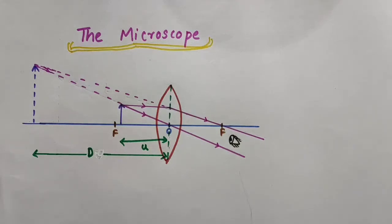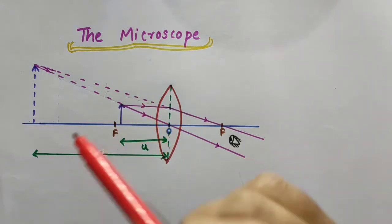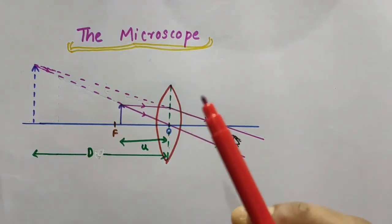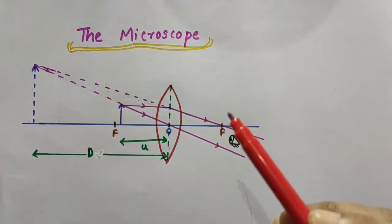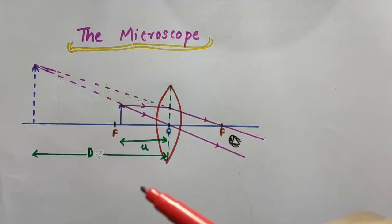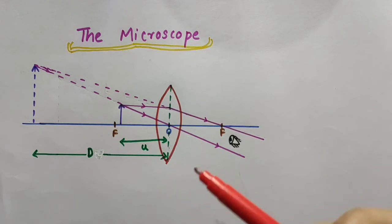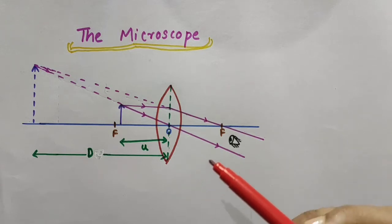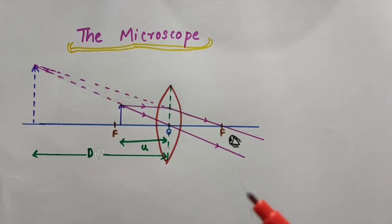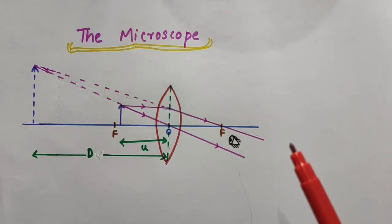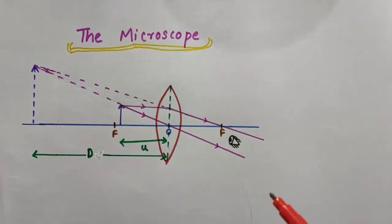Hello everyone. In this video we are going to discuss about the microscope, which is an optical instrument. We will derive one expression for the magnification when the image is formed at the least distance of distinct vision, that is at the near point D equal to 25 cm, and one expression for the magnification when the image is formed at infinity. A number of optical devices and instruments have been designed utilizing the reflecting and refracting properties of mirrors, lenses, and prisms. Microscopes, telescopes, binoculars, kaleidoscopes, etc. are some examples of optical devices in common use. Now let's look into our topic: the microscope.